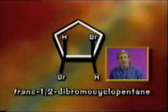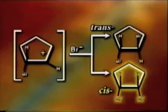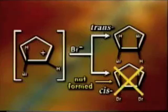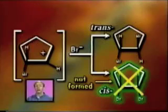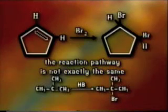Why is 1,2-dibromocyclopentane always found in the trans form? Basic statistics tell us that when the second bromide bonds to the carbocation, there should be at least half as many cis forms as trans. But the cis isomer doesn't form in this reaction with Br2. The whole truth is that the cis isomer never forms because the intermediate in the reaction is not a carbocation after all, and the reaction pathway is not exactly the same as it was for the reaction between HBr and 2-methylpropene.